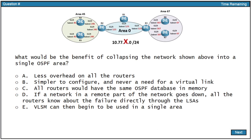What would be the benefit of collapsing the network shown above into a single OSPF area? Obviously, what we have here above is one that is not a single OSPF area — we have three OSPF areas. Of course, we have non-backbone areas connected to the backbone. Everything looks good. Let's go ahead and see which of these would be a benefit.